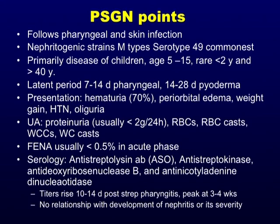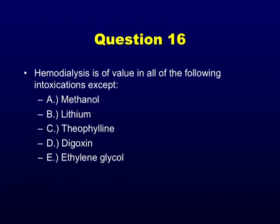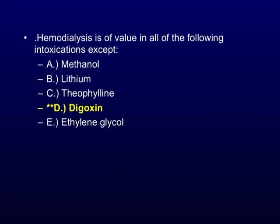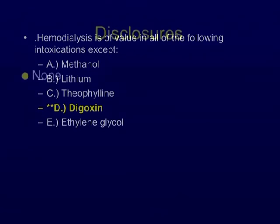Post-strep GN follows pharyngeal or skin infections, primarily a disease of children. There's a latent phase, they present with nephritis, urine shows red cells and red cell casts, complements are usually low, and serologies are usually abnormal. Question 16: Hemodialysis is of value in all the following intoxications except digoxin — because digoxin is protein-bound and therefore will not be dialyzed off.